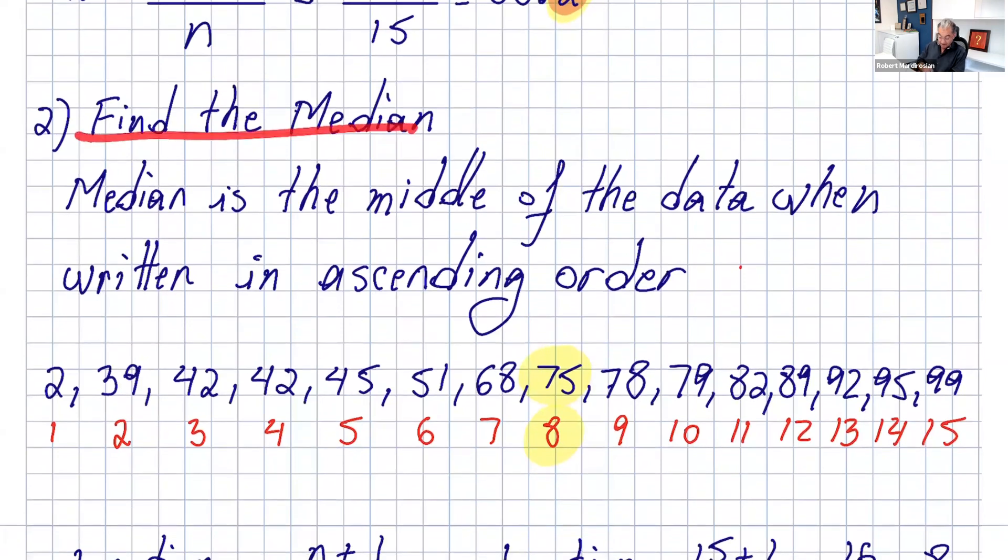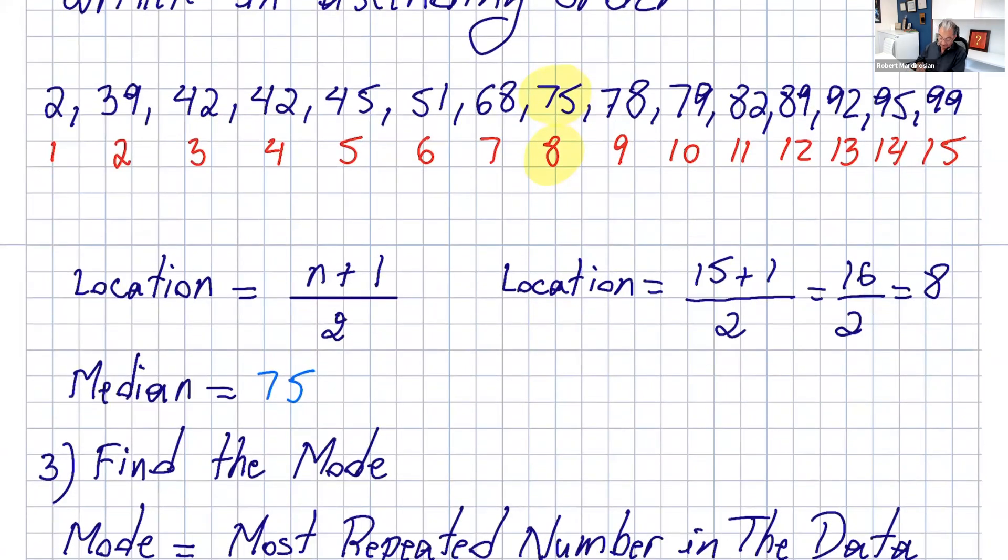The second item is the median. The median is the middle of the data when written in ascending order. The location of the median is n plus one divided by two. So 15 plus one divided by two is eight. Eight is not the median, eight is the location. The median is 75, which is at the eighth location. If this number was 8.5, you take the average of the eighth and ninth number.